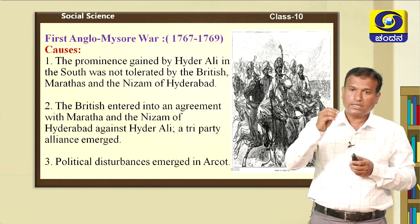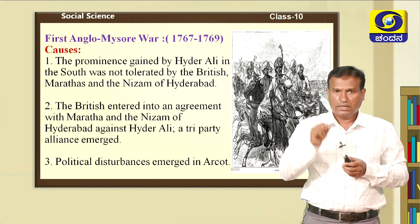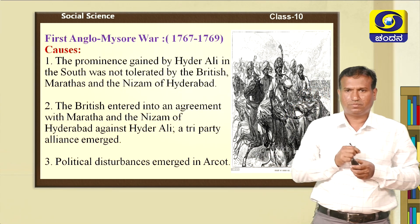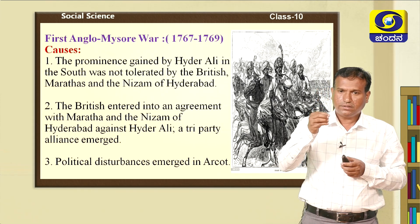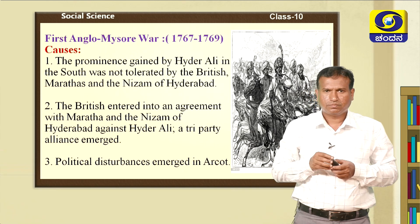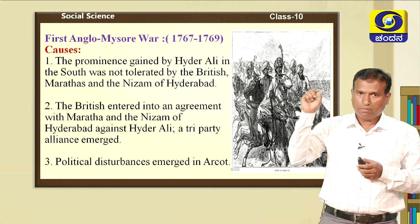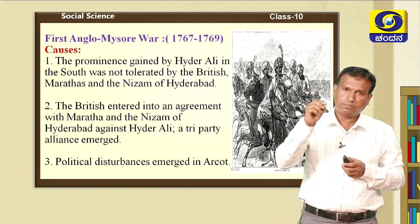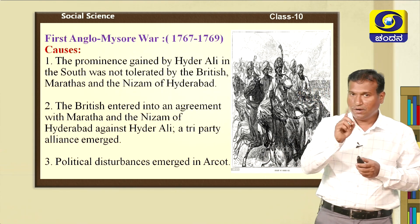The growth of Haidrali was responsible for the First Anglo-Mysore War, which took place in 1767 and continued till 1769. The prominence of Haidrali started to alarm neighboring rulers like the Nizam of Hyderabad and the Marathas. The Marathas had enmity with Haidrali because in 1758, the Marathas used to come to Srirangapatna to collect Chautahi — one-fourth of the agricultural produce. But Haidrali asked the people of Srirangapatna not to pay Chautahi to the Marathas, making him very popular among the people.